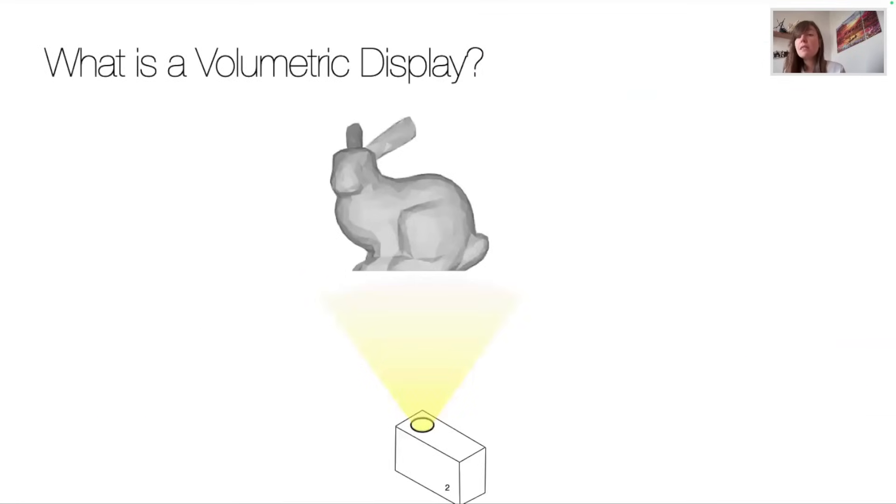So first thing first, what's a volumetric display? Well, it's a device that forms a visual representation of an object in three physical dimensions, in true 3D. It is autosteroscopic and provides a different view to each eye, thus creating true 3D content without forcing the users to wear a headset or glasses.